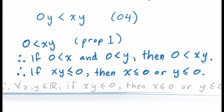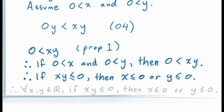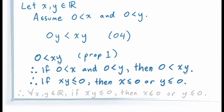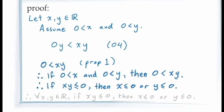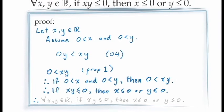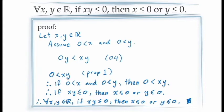All that remains is to say: since X and Y were arbitrary real numbers, the conclusion holds for all values of X and Y in the real numbers. And this completes the proof. Let's look at another example.